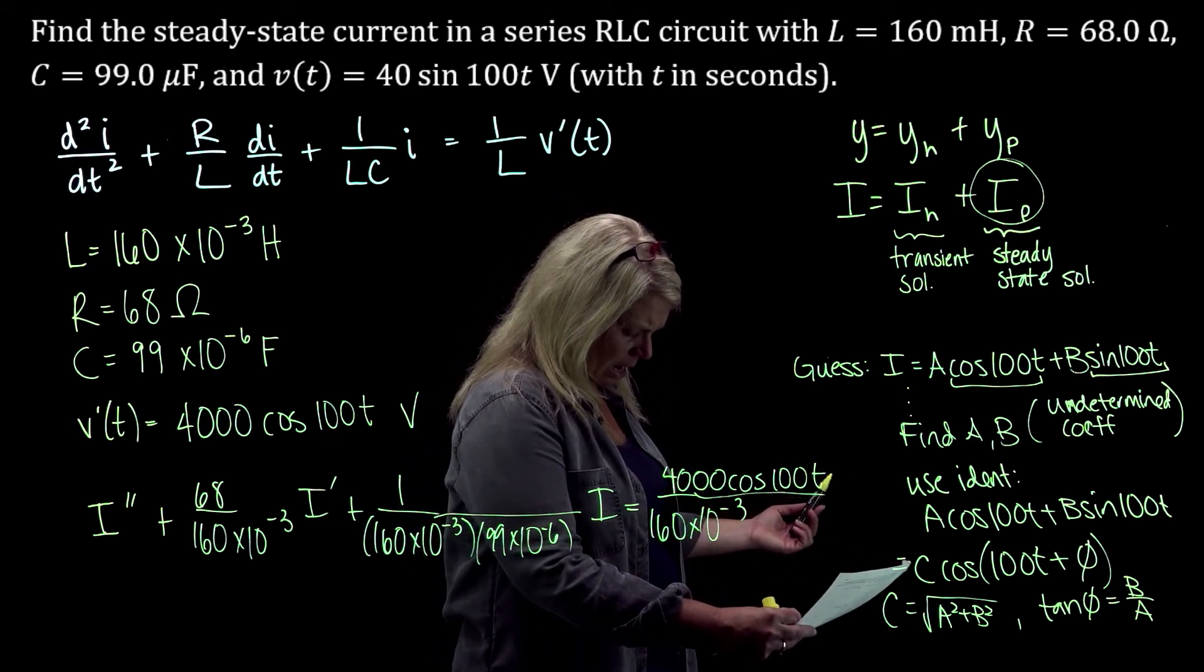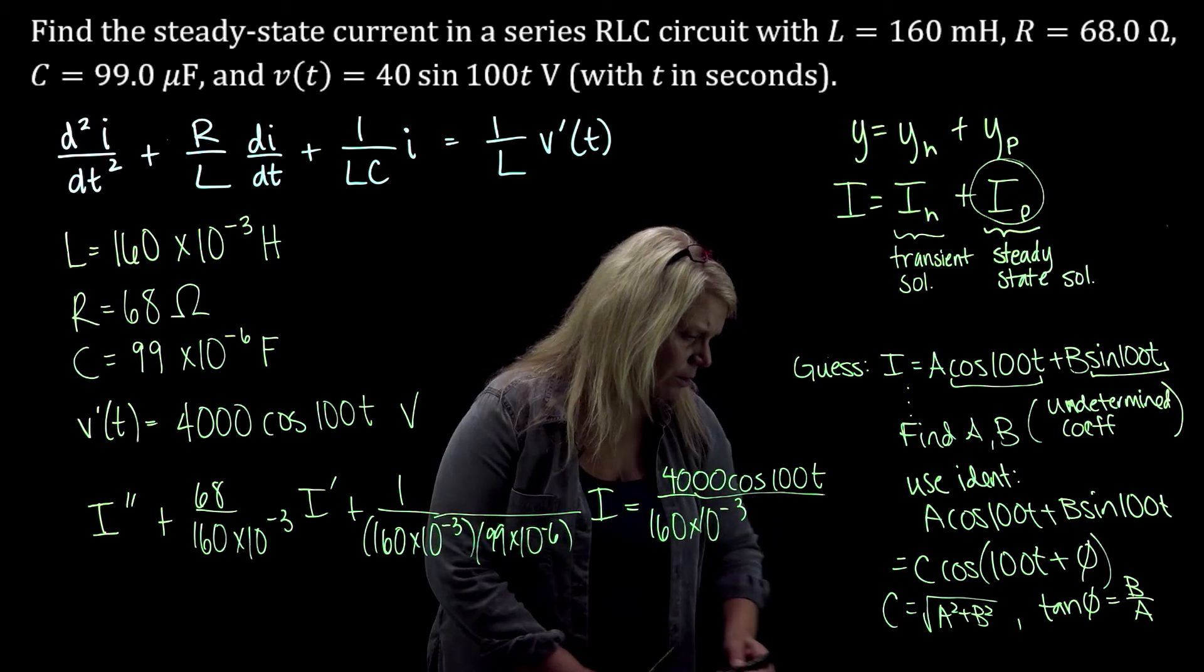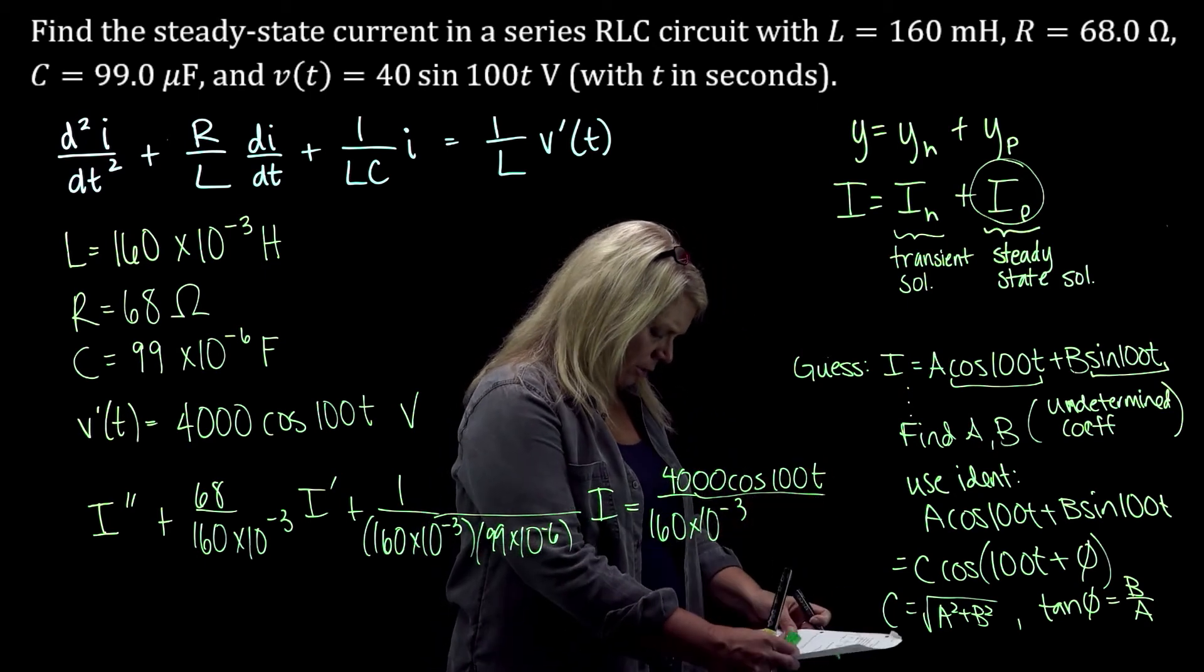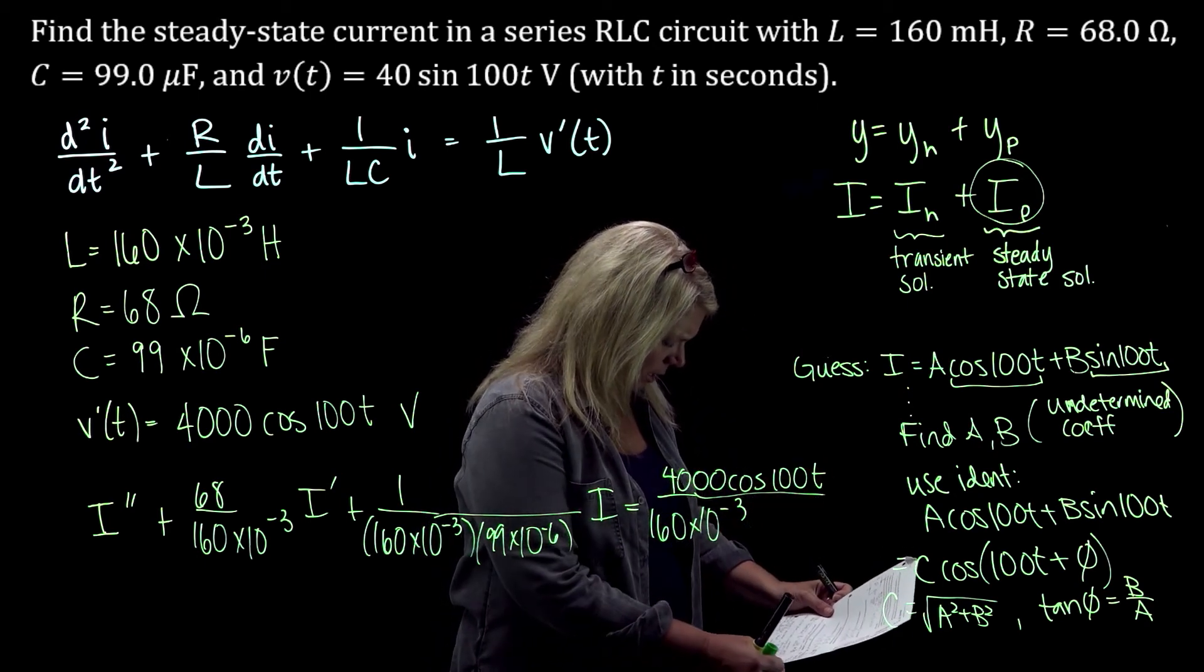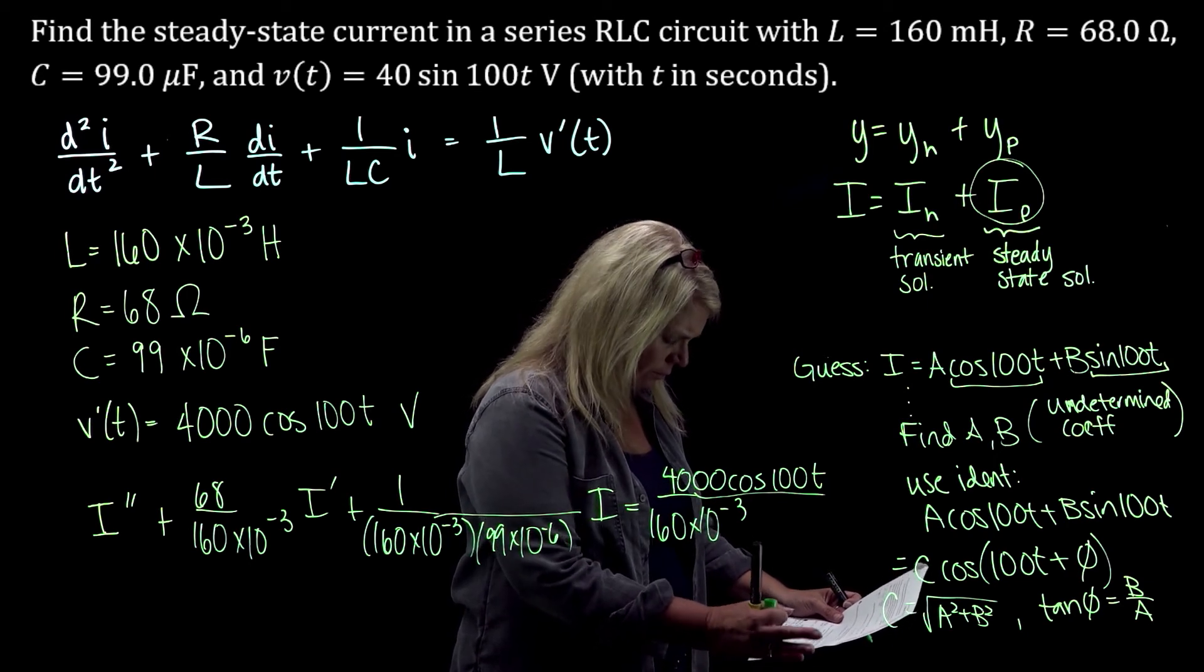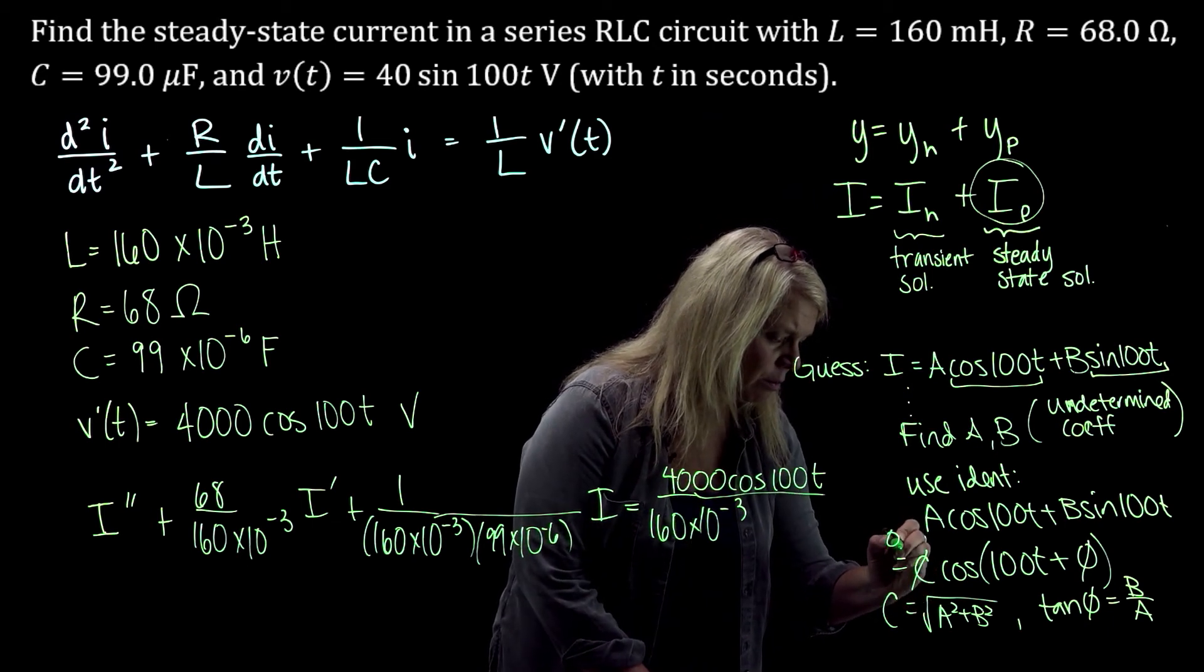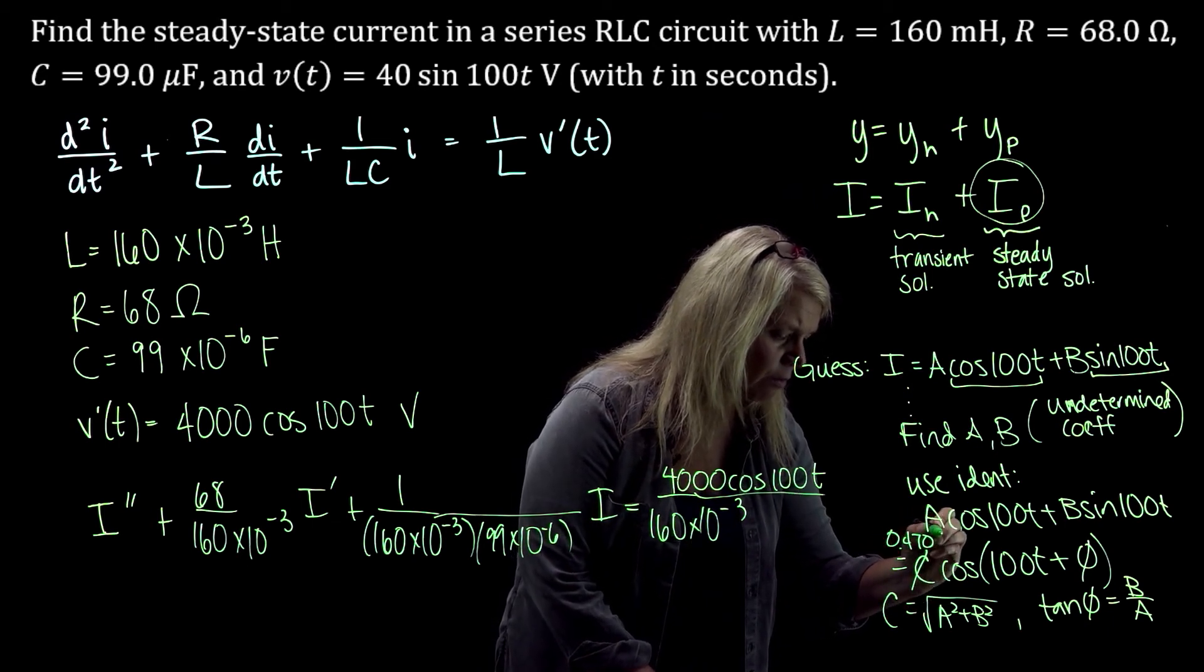So for this one, we get, I'm not going to find the phi here, but really what I want to focus on here is the c. So for this one, when you do those calculations, you get that c is to four decimal places, 0.4705.